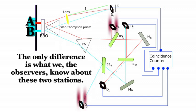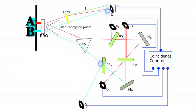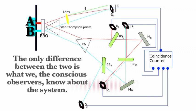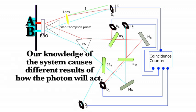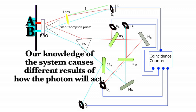But the only difference is what we, the observers, know about these two stations. Because of the experiment setup, we know that if a photon hits D3, it will always be a clump pattern, showing the photon only went through one slit. If it hits D1, we know it will always be an interference pattern, showing that the photon acted in a way as if it went through both slits. But the only difference between these two is what we, the conscious observer, know about the system. Our knowledge of the system causes different results in how the photon will act.